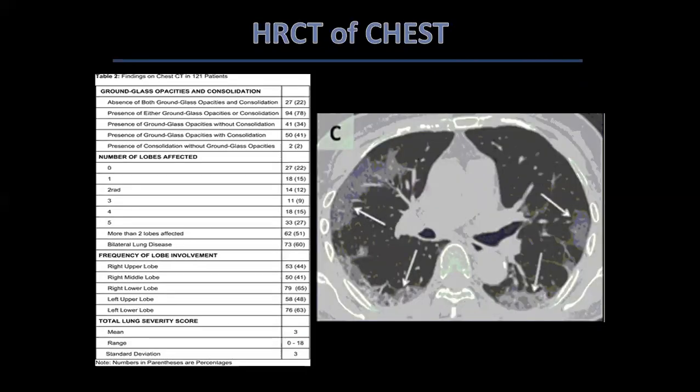A study involving about 121 patients showed that a majority had ground glass opacities, bilateral in most patients, with lower lobes involved in the majority. On imaging, ground glass opacities preferably inhabit the peripheral areas of the lung. As the disease progresses in sicker patients, the reverse halo and crazy paving patterns also emerge on HR-CT pictures.